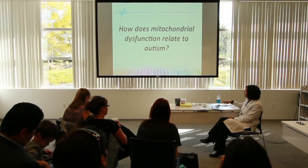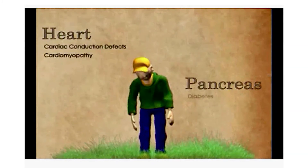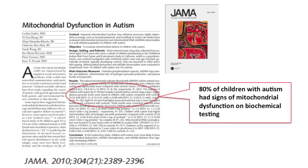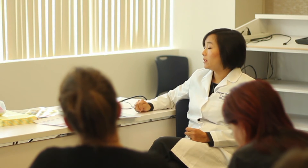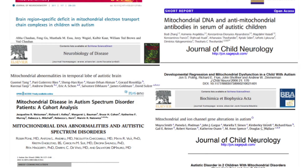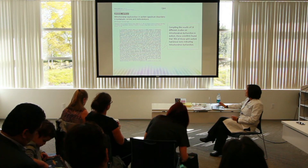Let's look more specifically at how mitochondrial dysfunction relates to autism. At the end of the video, they refer to brain disorders as one of the types of diseases that Mito is related to. And in the past several years, research has really started to show that autism is one of those brain disorders where mitochondrial dysfunction is very likely to be common. A study at UC Davis looked at a range of biomarkers for mitochondrial dysfunction in children with autism compared to neurotypical children, and found that 80% of children with autism had signs of mitochondrial dysfunction on biochemical tests.